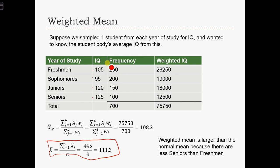As you can see in the frequency column, we actually have 250 freshmen, 200 sophomores, 150 juniors, and 100 seniors.